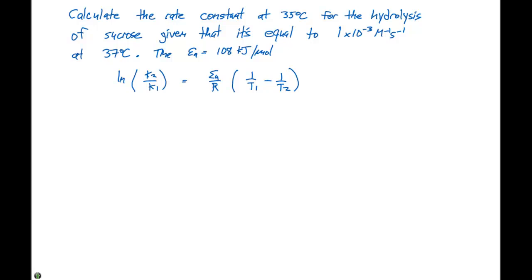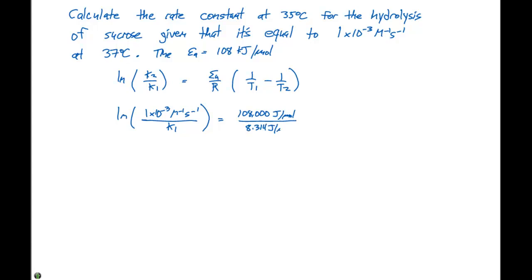So in this particular case, we take the natural log of 1.0 times 10 to the minus three molar to the minus one second to the minus one, divided by K1, which is what we're solving for. That equals the activation energy of 108,000 joules per mole — converting from kilojoules so units match R — divided by 8.314 joules per mole Kelvin, multiplied by one over 308 Kelvin minus one over 310 Kelvin.